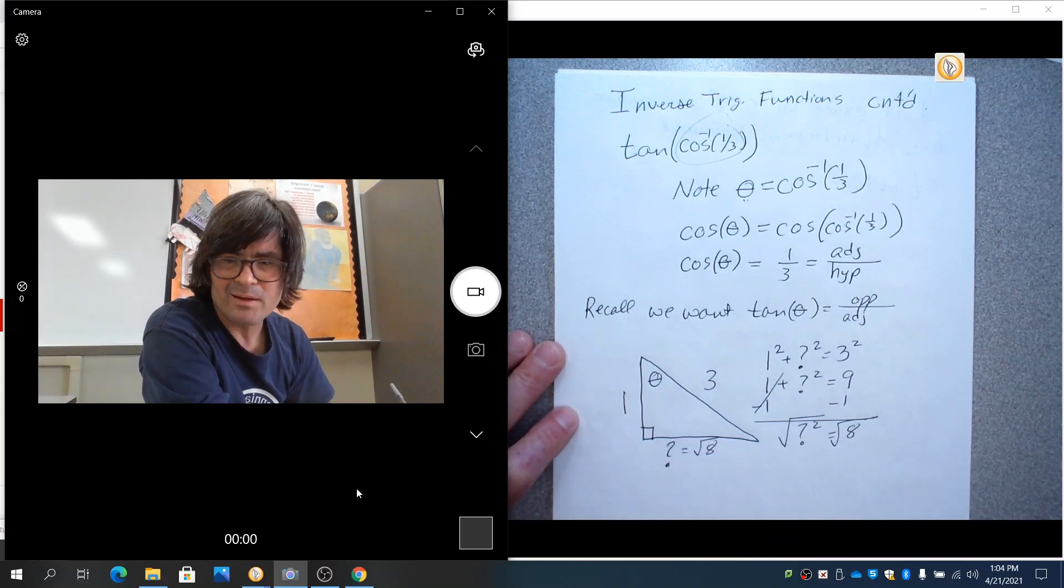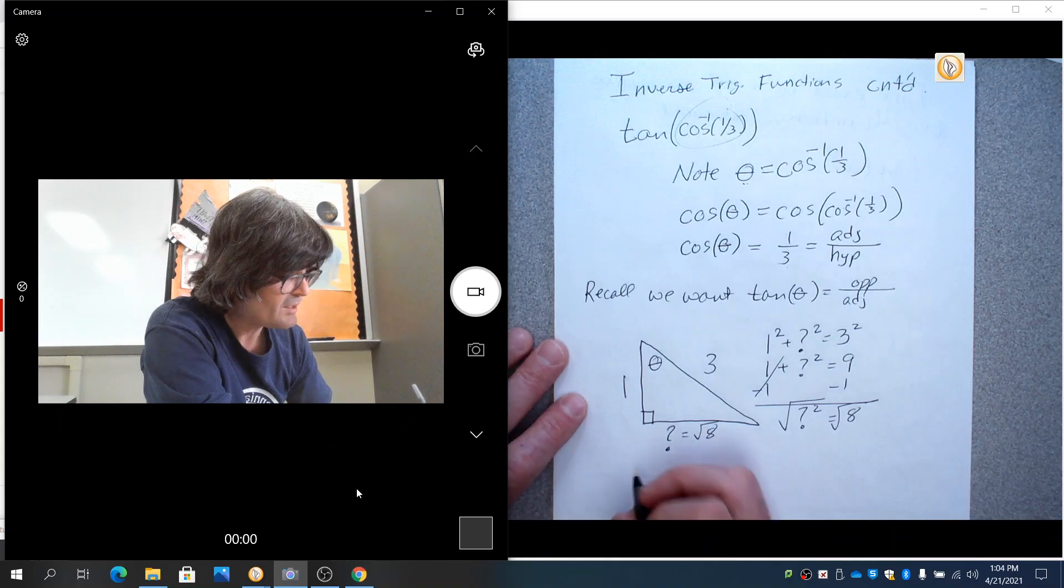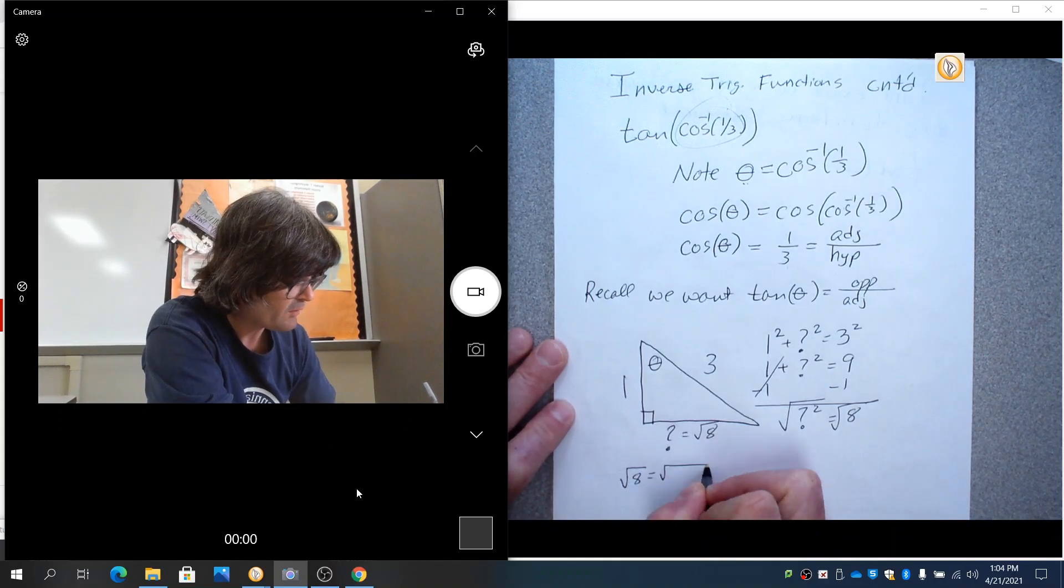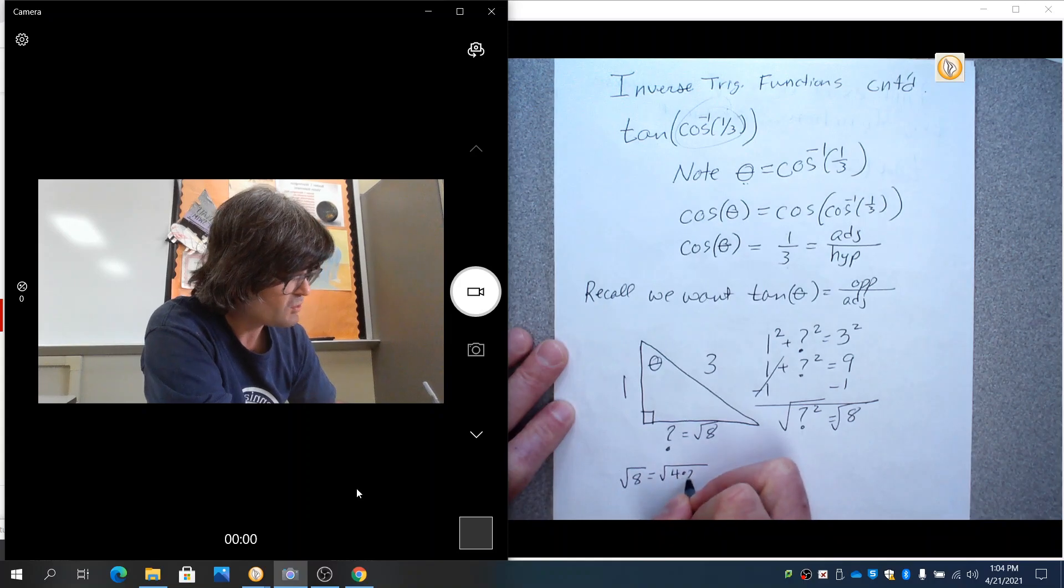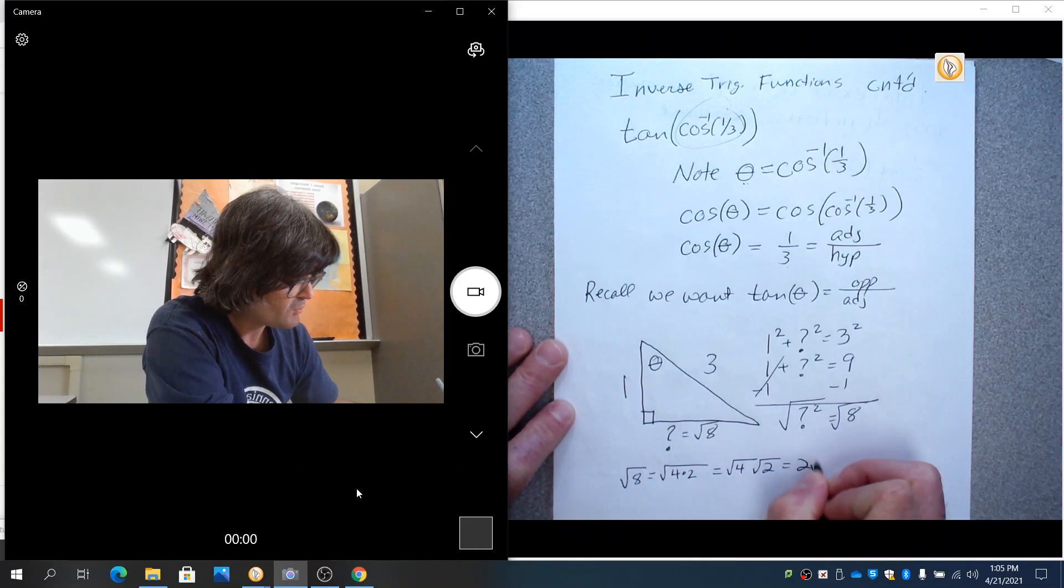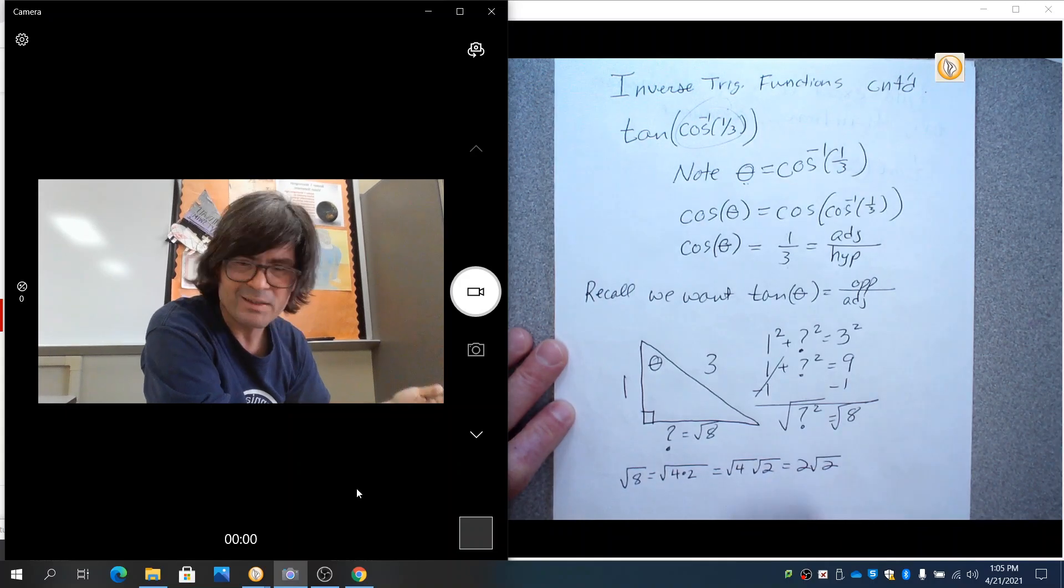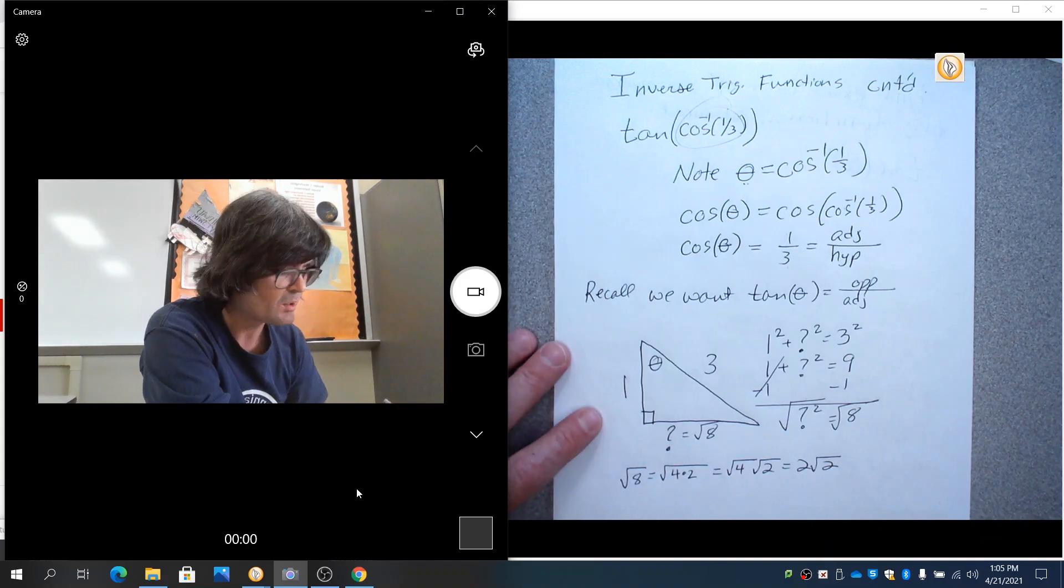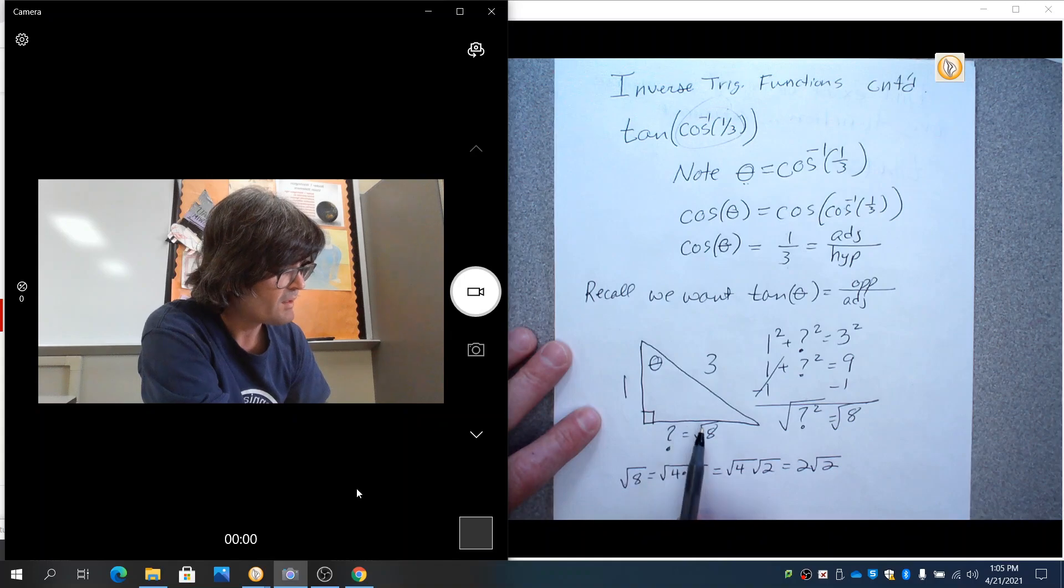Someone might get cranky with you about the square root of eight. Remember the square root of eight is the same as the square root of four times two, which is the square root of four times the square root of two. So two roots of two, not a big issue, but just worth mentioning. The square root of eight can be reduced to two roots of two. That is my opposite side. That's my adjacent side. That's my hypotenuse side.